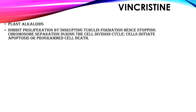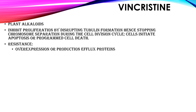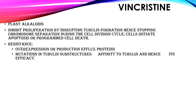The next drug in the R-CHOP regimen is vincristine. Vincristine is a plant alkaloid that inhibits cell proliferation by disrupting tubulin formation. Tubulin belongs to the alpha or beta tubulin protein family that helps in DNA segregation during cell cycles. By this disruption, chromosome separation cannot proceed during cell division. When cells start malfunctioning due to the vincristine effect, apoptosis will be initiated and these cells will be eliminated from our bodies. Cancer cells can establish resistance to vincristine either by overexpression of an efflux protein that sends vincristine out of the cells, or by mutations in tubulin substructures that decrease vincristine's affinity to tubulin.